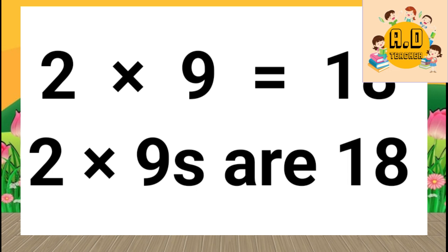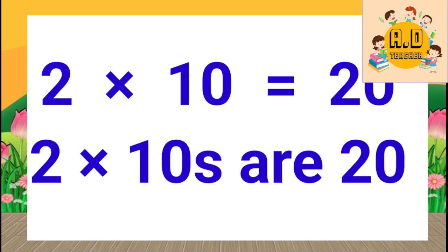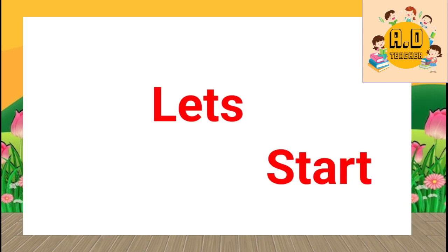2 nines are 18, 2 tens are 20. Let's learn the table of 2 one more time.